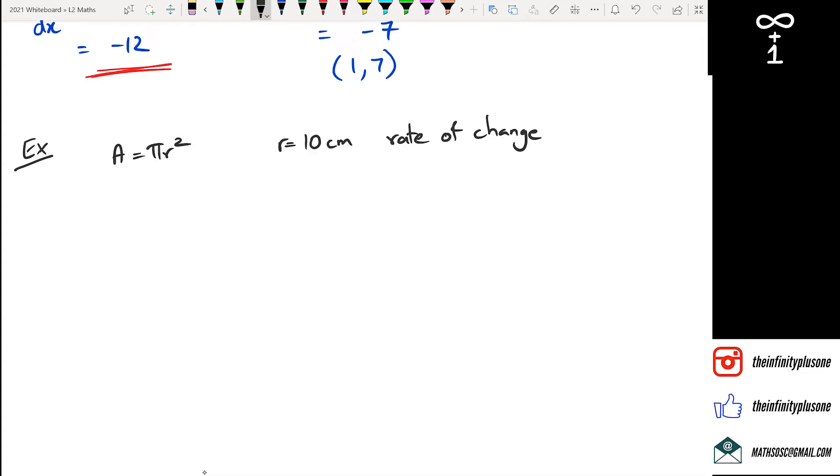So all we really have to do is if we substitute 10 into this function, what we're going to get is the actual area when the radius is equal to 10 centimeters. But the question is actually asking what is the rate of change when the radius is equal to 10.